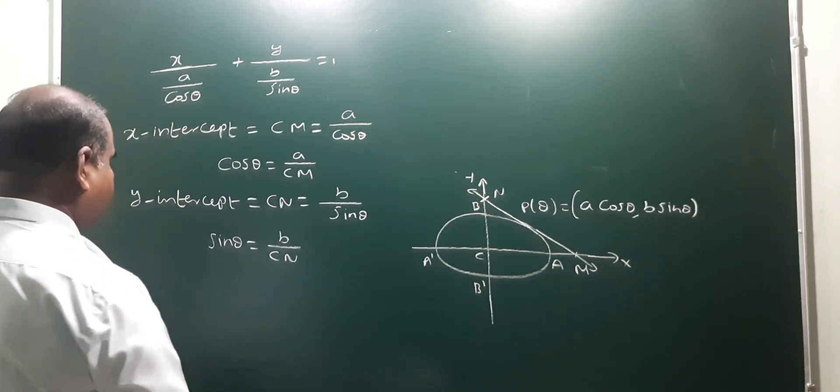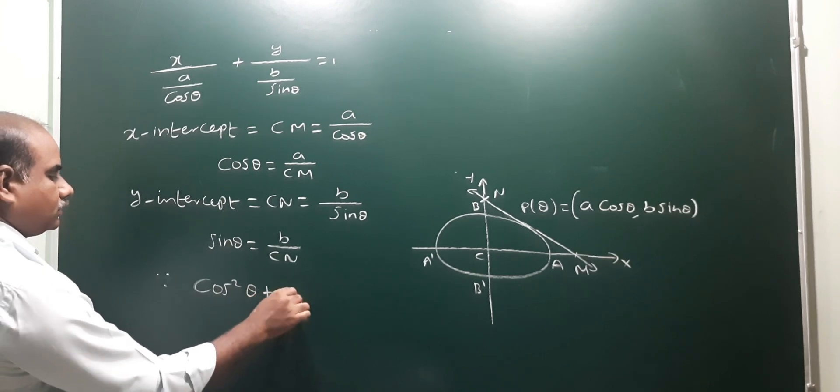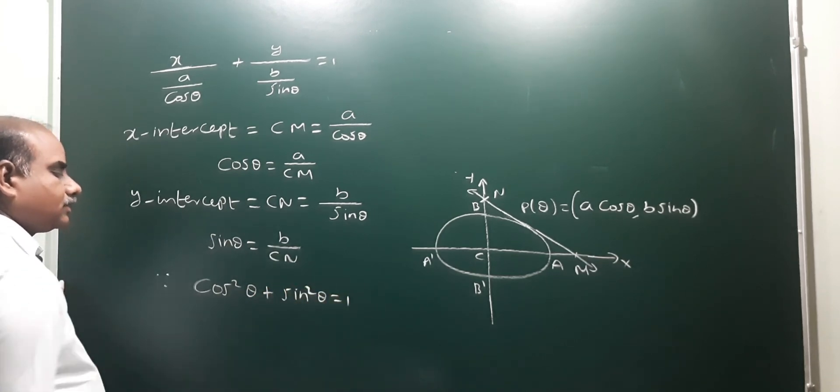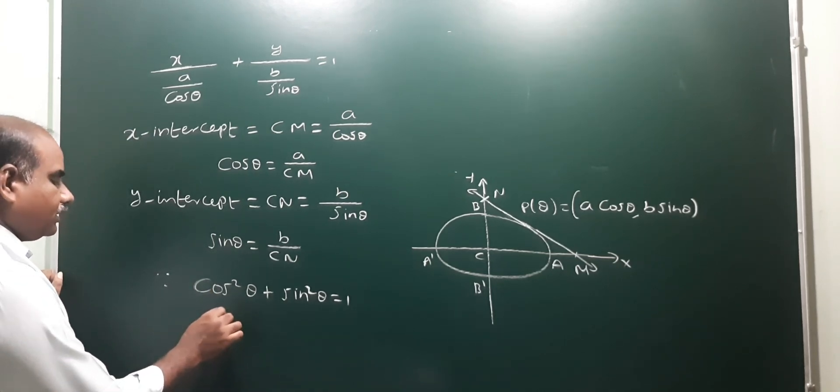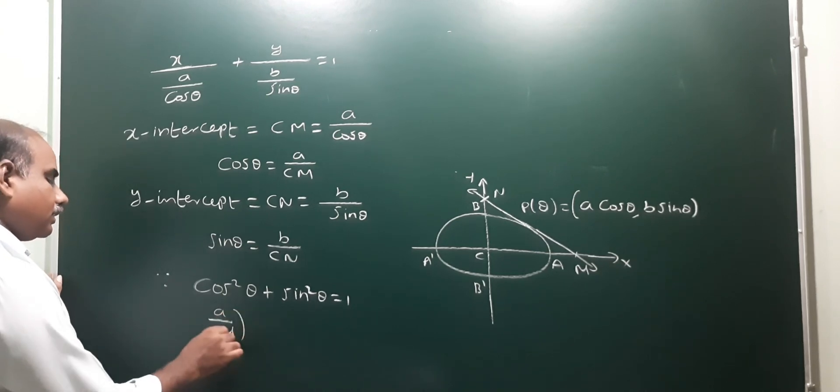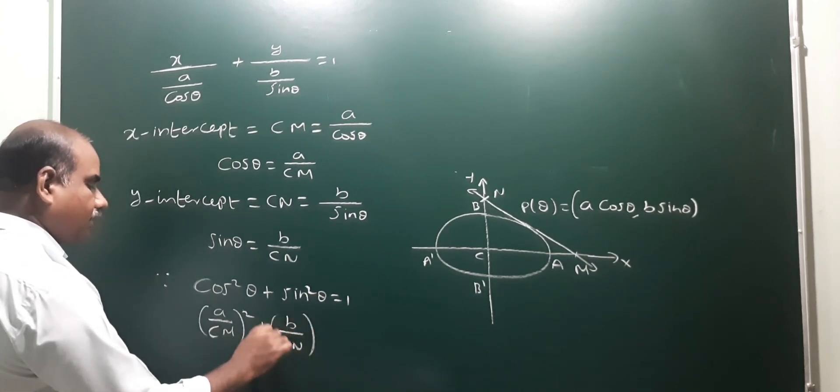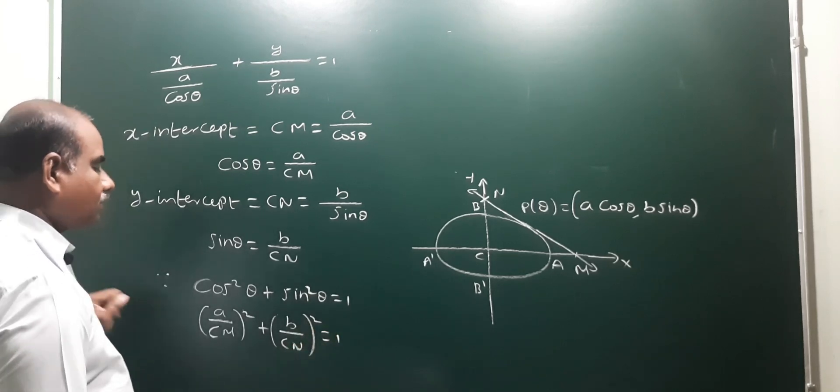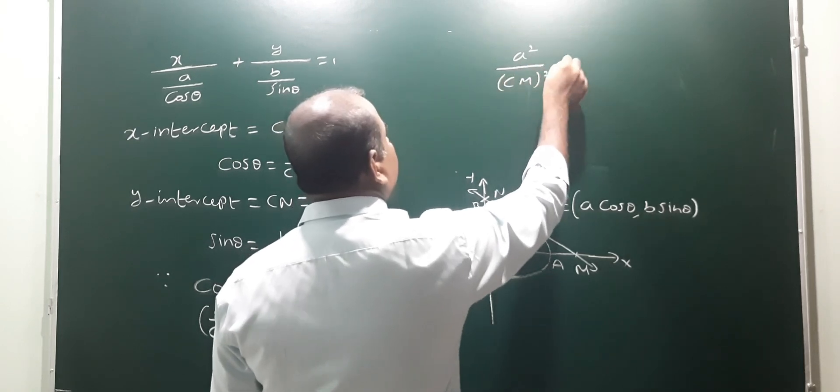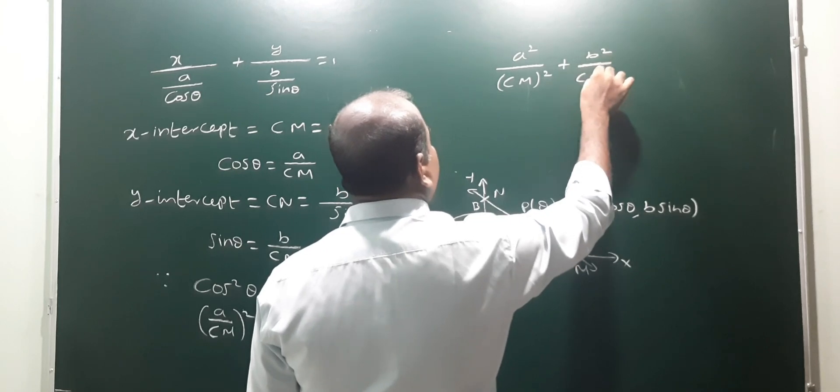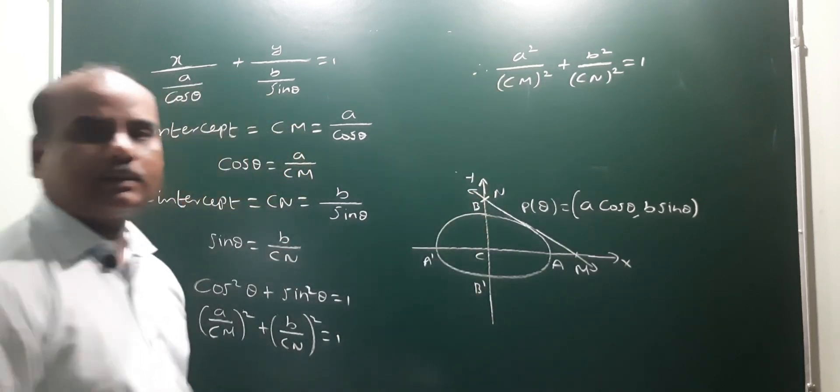Since cos squared theta plus sin squared theta is equal to 1, the first principle of trigonometry. Cos theta value is a by CM, so cos squared is a squared by CM whole squared. Sin is b by CN, so sin squared is b squared by CN whole squared. Finally, it is equal to a squared by CM whole squared plus b squared by CN whole squared is equal to 1. So this is our result.